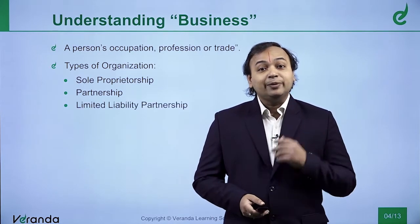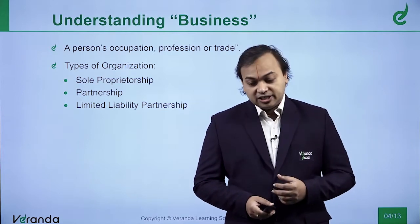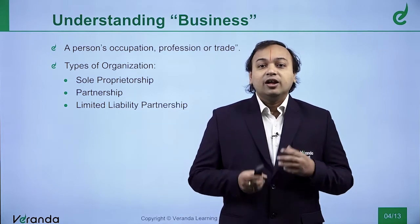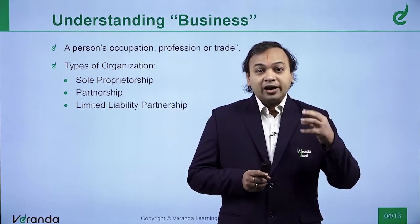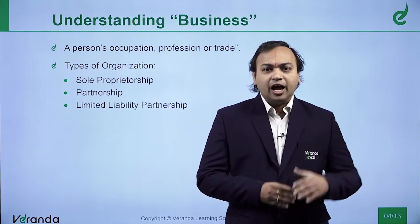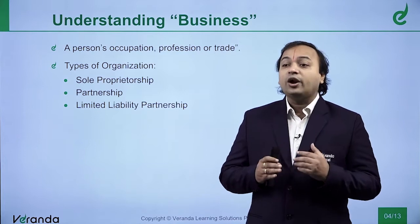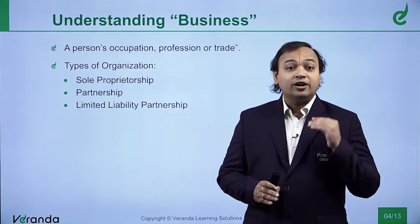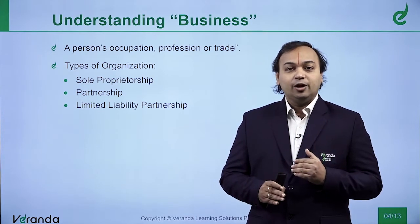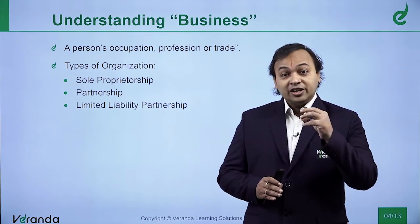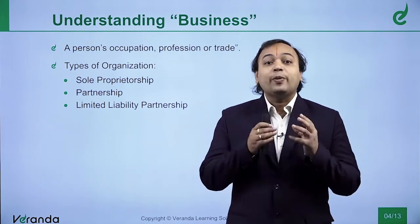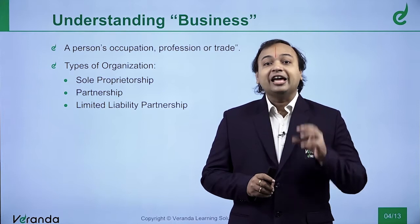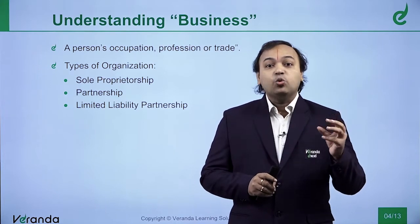Next comes the limited liability partnership. The first two types of organization — sole proprietorship and partnership — are primarily relating to unlimited liability. When carrying on a business, you want to limit your risk. At one point in time, you want to clearly know what your downside risk is. That protection can be got from a limited liability partnership, which clearly defines the maximum loss a partnership is willing to take. Beyond that, the partnership is not liable to pay persons who are affected.